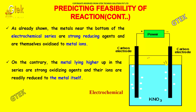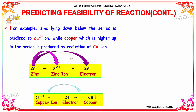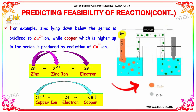On the contrary, metals lying higher up in the series are said to be strong oxidizing agents, and their ions are readily reduced to the metal itself. For example, zinc, lying lower in the series, is oxidized to Zn²⁺ ion, while copper, which is higher up in the series, is generally produced by reduction of Cu²⁺ ion.